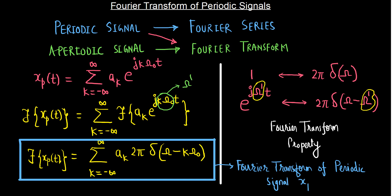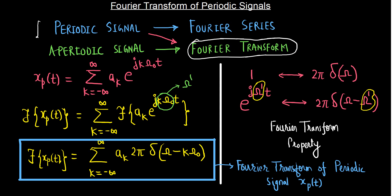We have seen that Fourier transform is a very versatile tool. For periodic signals, the tool we introduced earlier was the Fourier series; for aperiodic signals, the tool was the Fourier transform. But now we have proved that this Fourier transform can be used for both periodic as well as aperiodic signals. Of course, to obtain the Fourier transform of a periodic signal, we must know the Fourier series coefficients of that periodic signal.